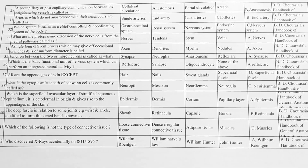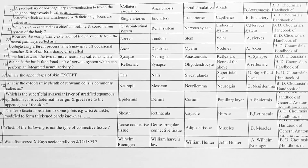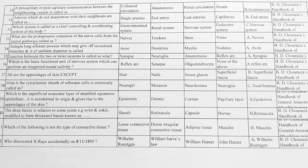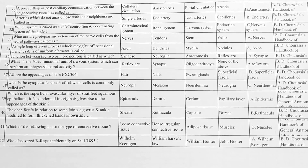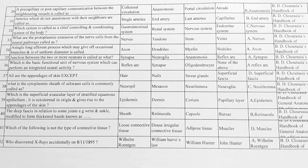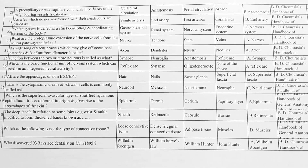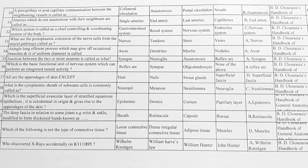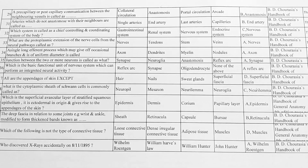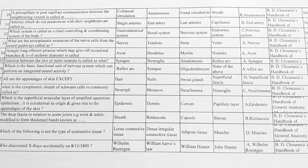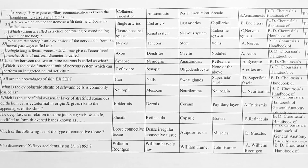Next, the precapillary or postcapillary communication between the neighboring vessels is called — options: A. collateral circulation, B. anastomosis, C. portal circulation, D. arcades. Option B is correct, anastomosis.